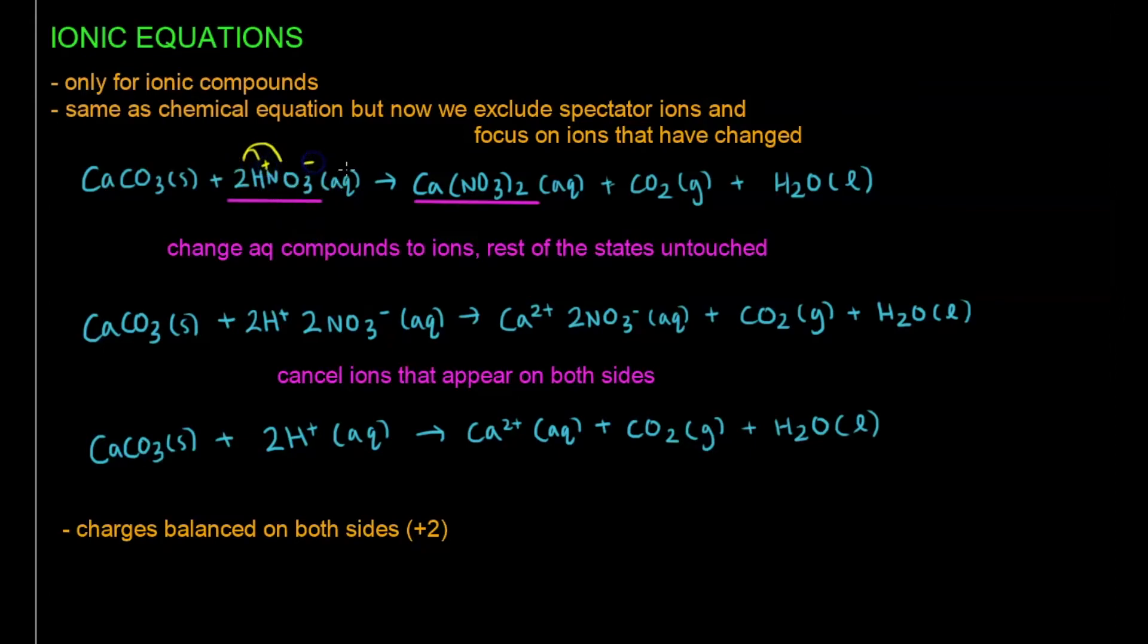So this number in front, I have to give to H and NO3, which will result in 2H+ and 2NO3-, because once I give the number in front to both of them, I'll result in this. Similarly, this one, I have to break it down into just ions, Ca2+ is just here.